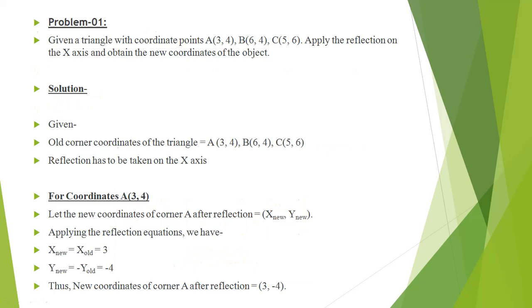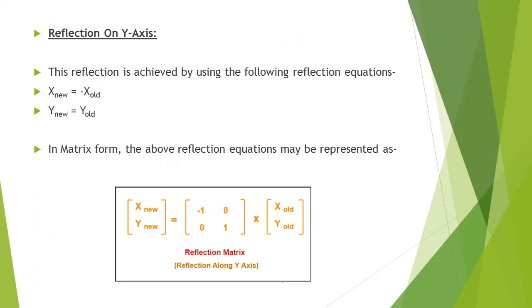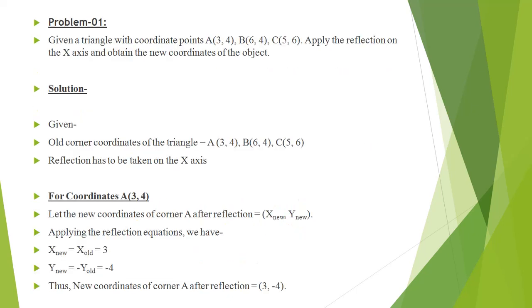Now we will solve a problem for reflection transformation. The problem statement is: given a triangle with coordinate points A, B, C, apply the reflection on the x-axis and obtain the new coordinates of the object. In this problem we are applying the reflection only on the x-axis. The first step is to initialize the old coordinates A, B, C of the triangle.